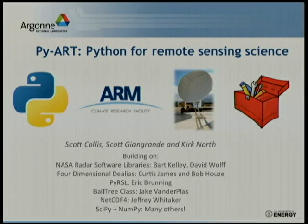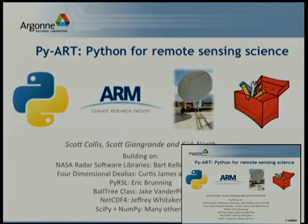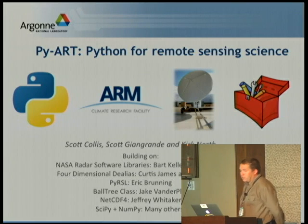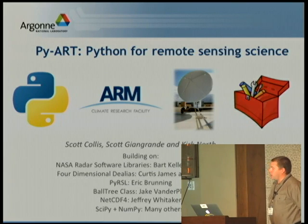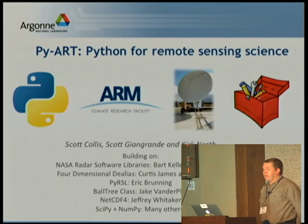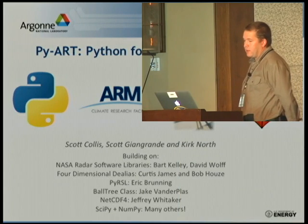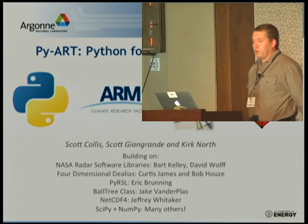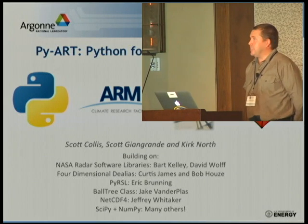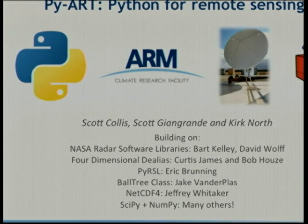I'm going to acknowledge people at the beginning of my talk rather than at the end, because without these people working on the various toolkits, I wouldn't have even been able to start. This is work built on the NASA radar software libraries developed at Goddard by Bart Kelly and David Wolfe. Four Dimensional D-A-List Code by Kurt James and Bob Howes from the University of Washington. PyRSL by Eric Brunning, the Balltree Class by Jake Vanderplas, NetCDF4 by Jeff Whitaker, SciPy, NumPy, and many others.